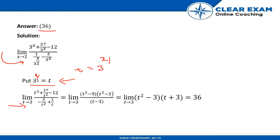Because we are taking t is equal to 3 to the power x by 2, so it is 27 by t square minus 12, divided by minus 3 by t square plus 1 by t. So it is equal to limits t tends to 3.